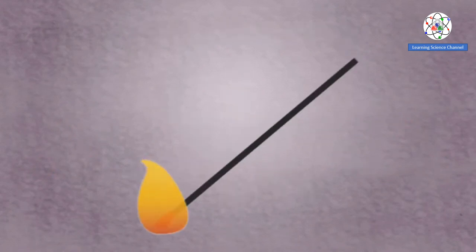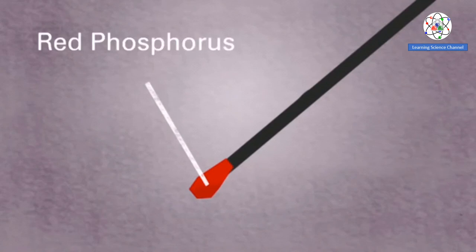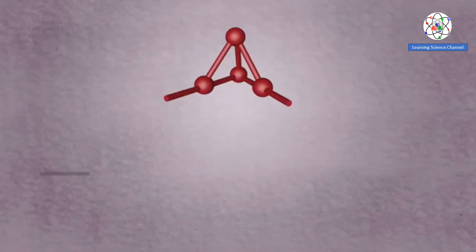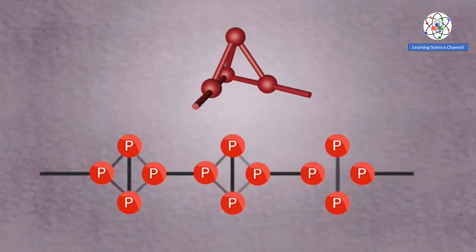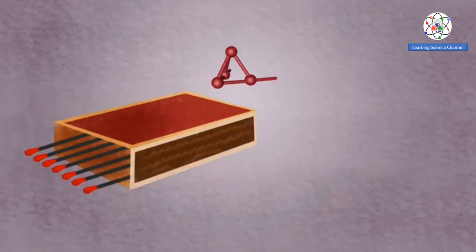The next time you strike a match, have a look at the match head. The match head is usually red. This is due to the presence of red phosphorus, an allotrope of phosphorus. The phosphorus atoms in red phosphorus are linked in a polymeric chain. Matches made of red phosphorus are known as safety matches.